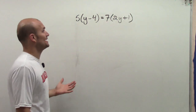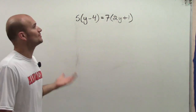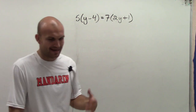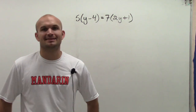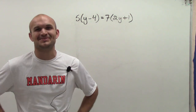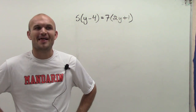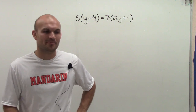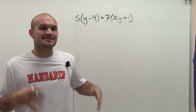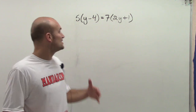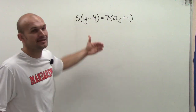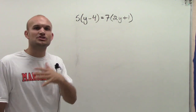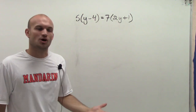So here I have 5 times y minus 4 equals 7 times 2y plus 1. A problem like this is going to get on your nerves, right? Because they're making us do so much extra work. But it's important for us to understand that we have to simplify this equation before we can even try to start to solve it.